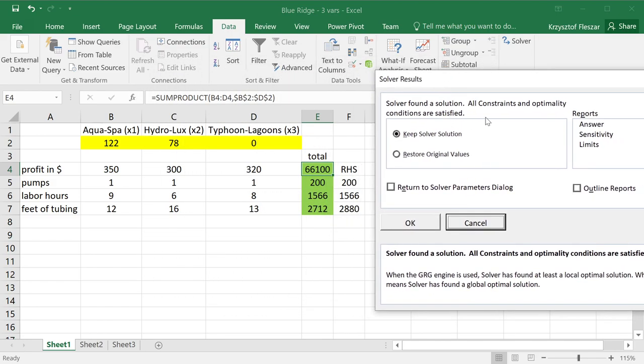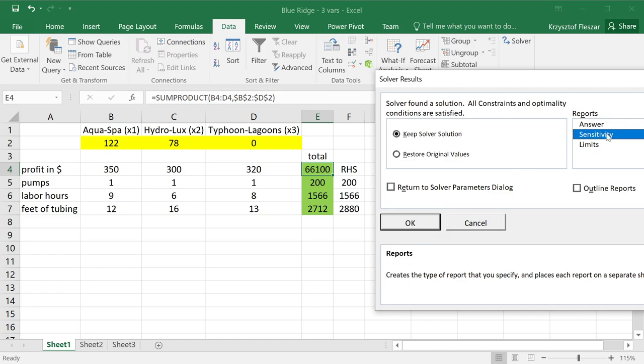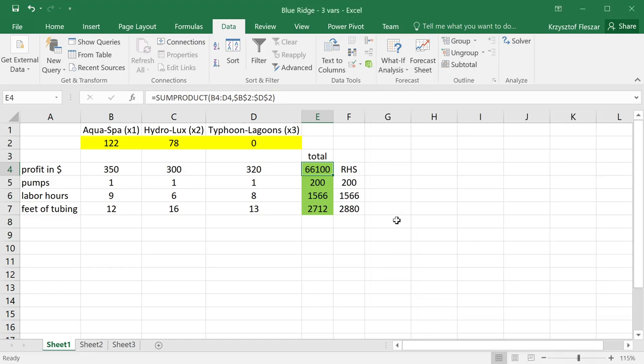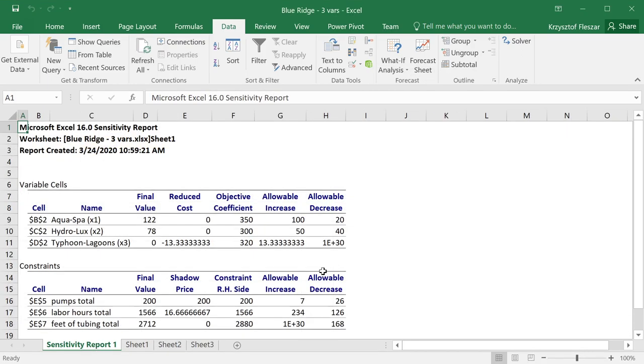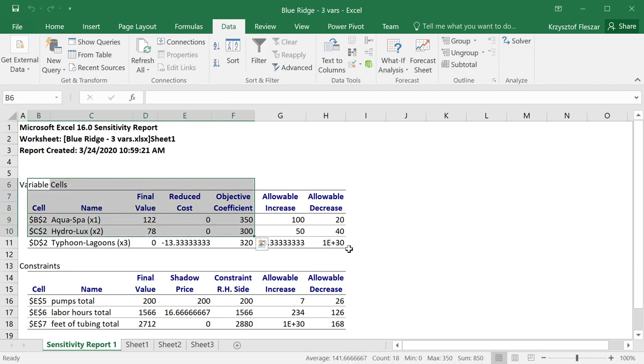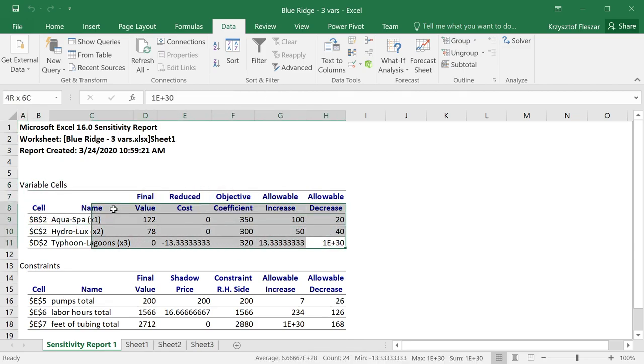I click Solve, and notice what happens. Solver found an optimal solution, all constraints and optimality conditions are satisfied, and we still have the same solution, 122.78, with the third decision variable zero. And what I want you to now see is we will go to the sensitivity report.